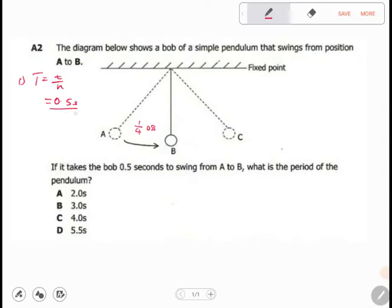So this will be, now what is a quarter? A quarter is 0.25. So period will be equal to 2 seconds.